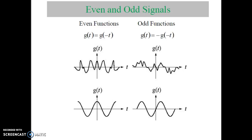We know that x of t can represent the value of a signal for positive t, and x of minus t can represent the value of a signal for negative t. So you can see in the figure this is the condition for even functions.